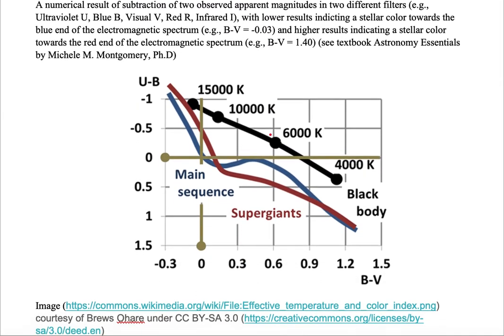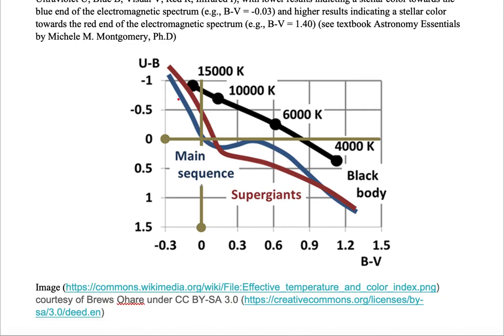Let's take a look at an example. Here we're looking at main sequence stars and supergiants, and this is the curve of a perfect black body. We're looking at color index B minus V on the horizontal axis and color index U minus B on the vertical axis.